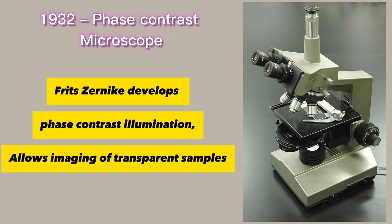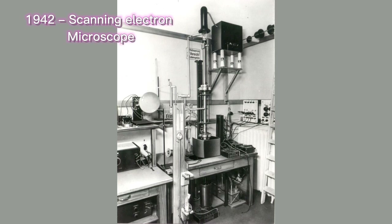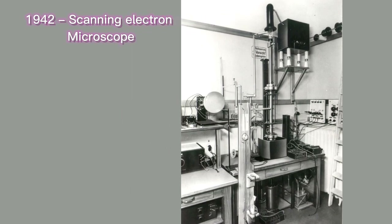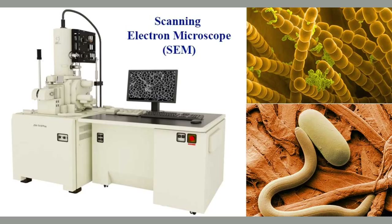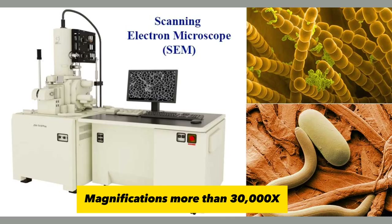In 1932, Fritz Zernike developed phase contrast illumination, which allows the imaging of transparent samples. Also in 1942, Ernst Ruska built the first scanning electron microscope, which can reach magnifications of more than 30,000 times.